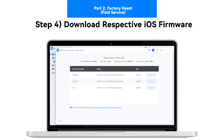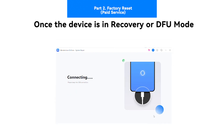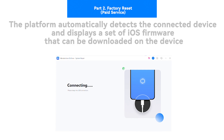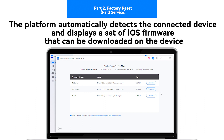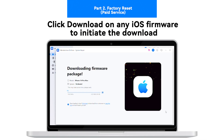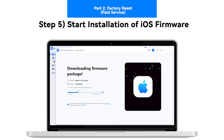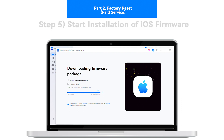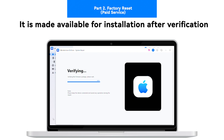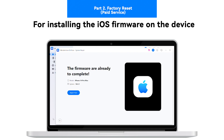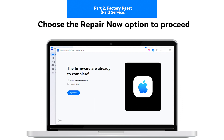Step 4: Download Respective iOS Firmware. Once the device is in recovery or DFU mode, the platform automatically detects the connected device and displays a set of iOS firmware that can be downloaded on the device. Click Download against any iOS firmware to initiate the download. Step 5: Start Installation of iOS Firmware. As the firmware starts downloading on the platform, it is made available for installation after verification. For installing the iOS firmware on the device, choose the Repair Now option to proceed.